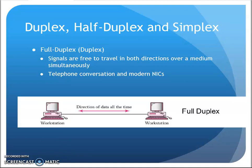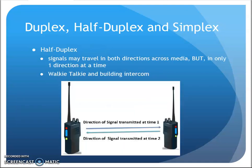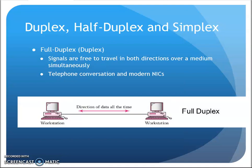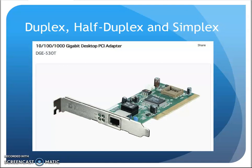Full-duplex is when both sides can transmit or receive simultaneously. Early days of networking, we ran into half-duplex connections. Modern days of networking, we run into full-duplex connections.